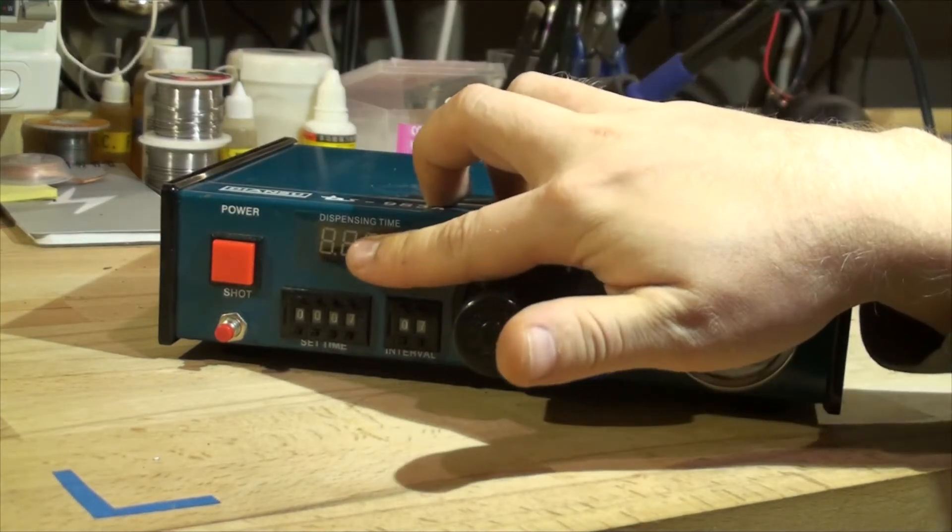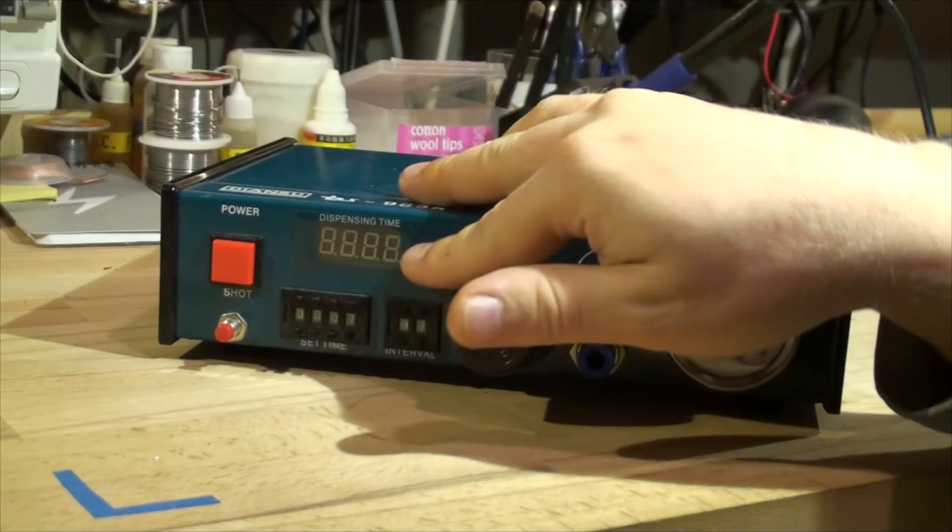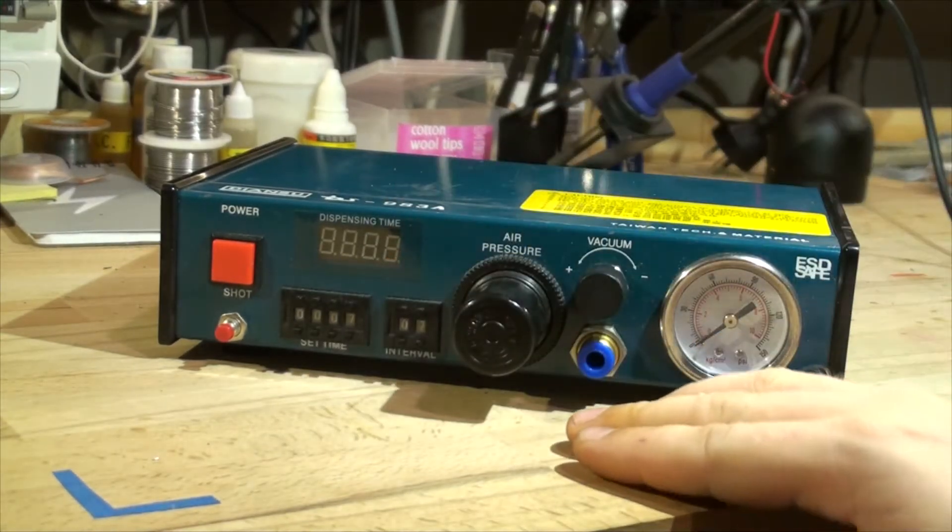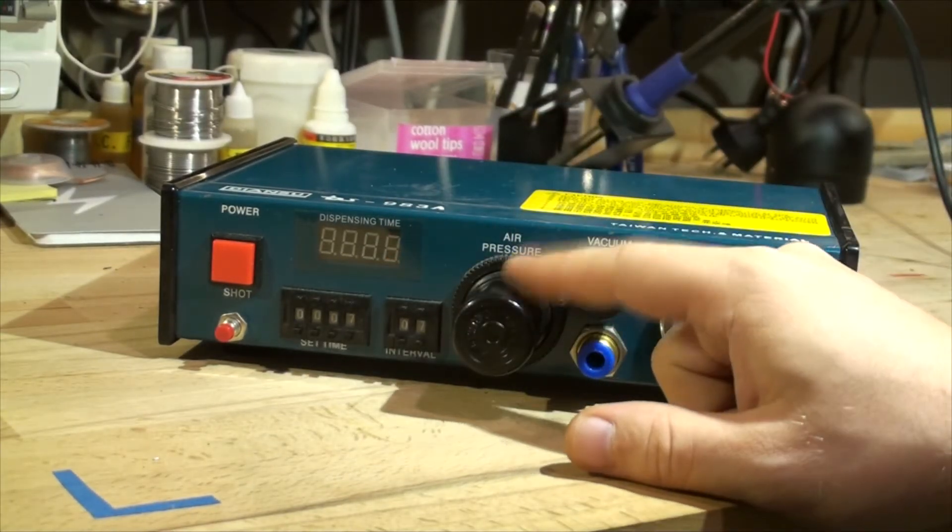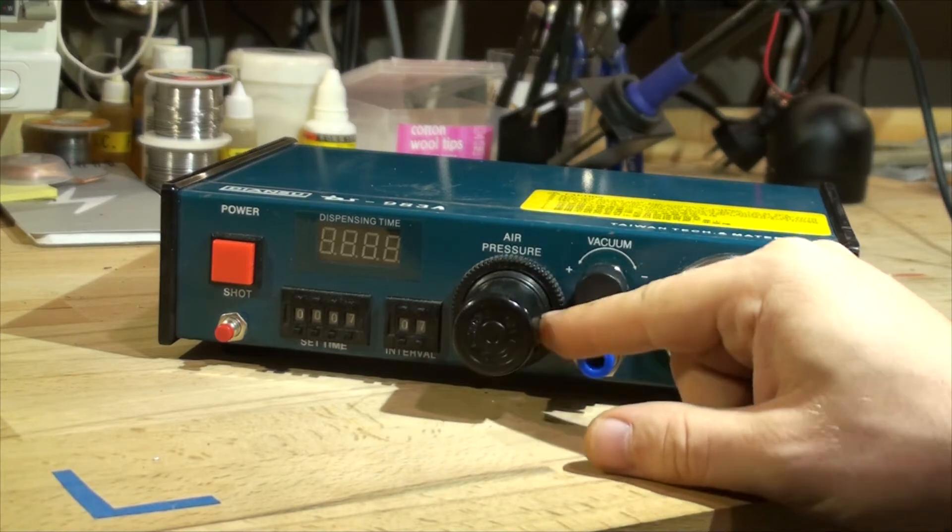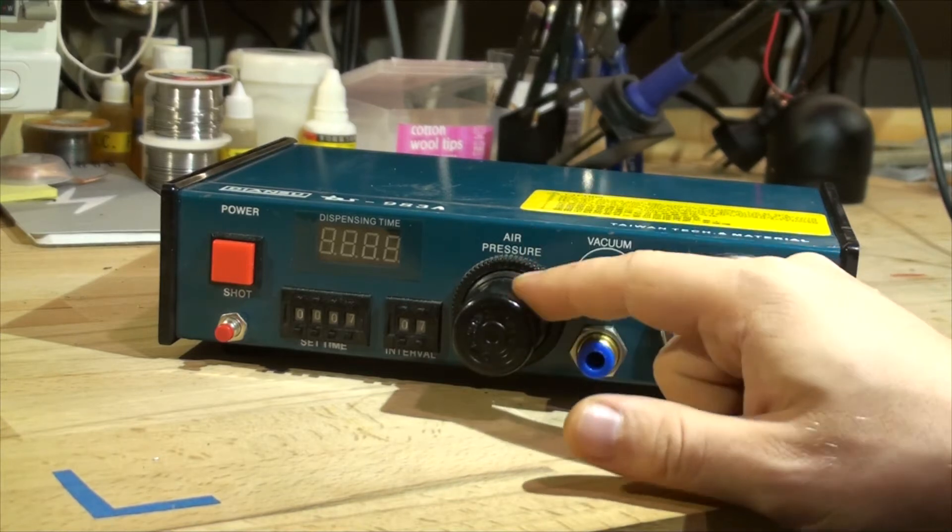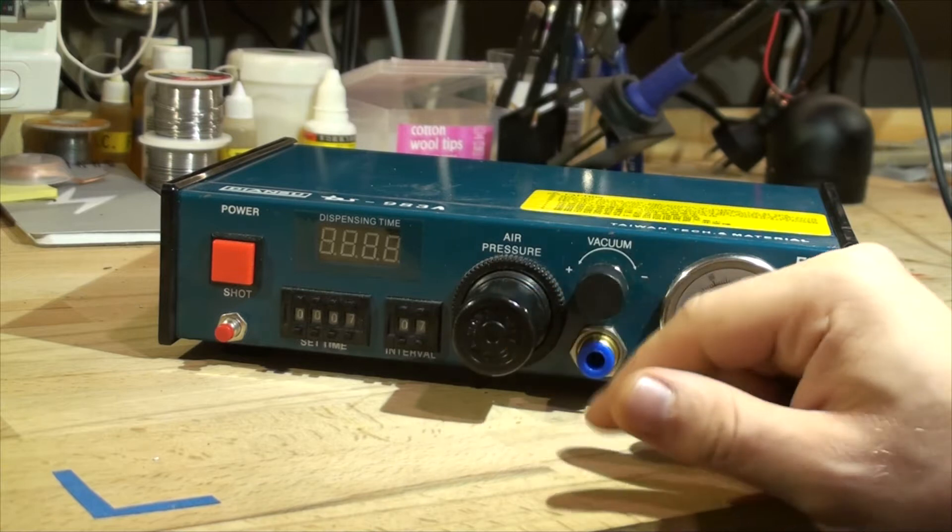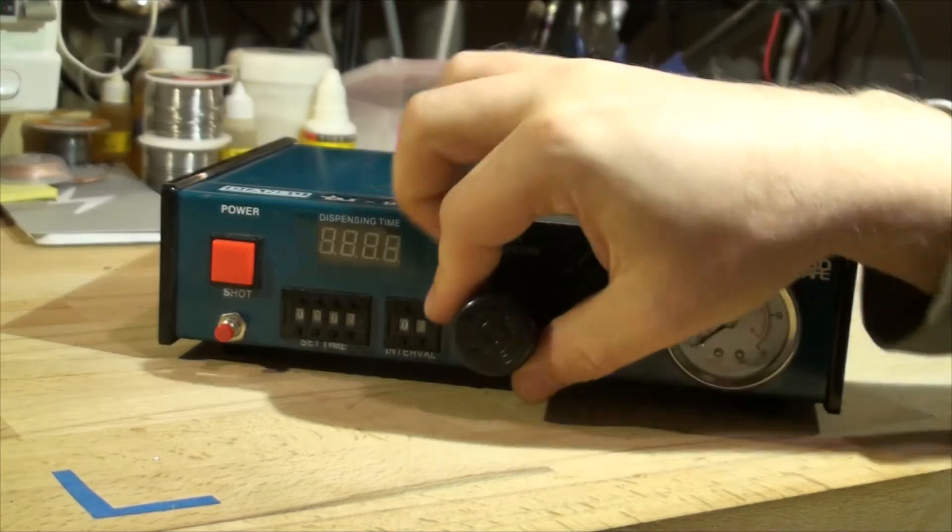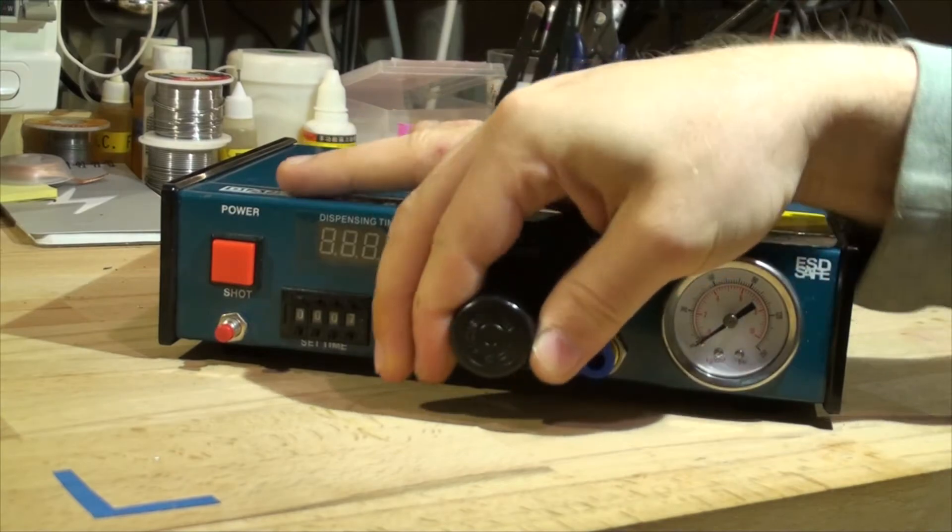That's this dispensing time. So that displays what's on here. That's exactly the same, just in digital format. Then we've got the air pressure adjustment, but if you're using a small air compressor, the air compressor would already have that. So you just open this to full and let the air compressor control the pressure. But to adjust it, you have to pull it first and then you can turn it.